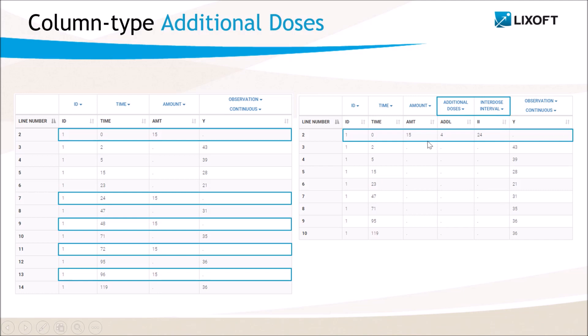The line contains the first dose at time zero. In addition, the value 4 in the column additional doses means that 4 doses will be added afterward and the value 24 in the column interdose interval means that the doses will be given every 24 hours.